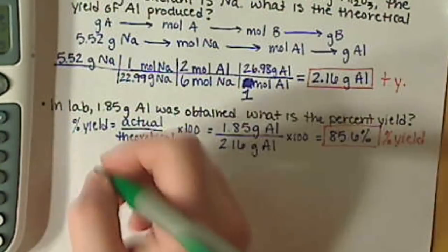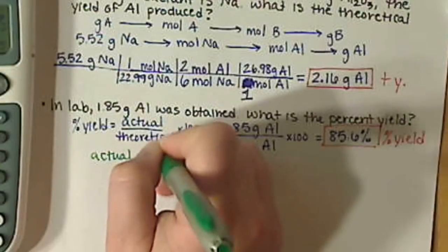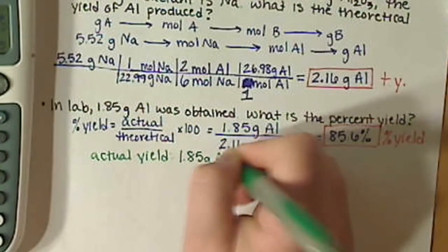And then just to make sure we were all on the same page, the actual yield is 1.85 grams of aluminum.